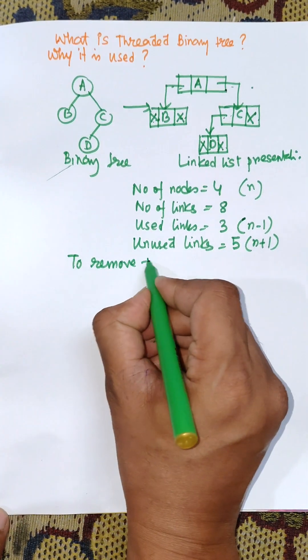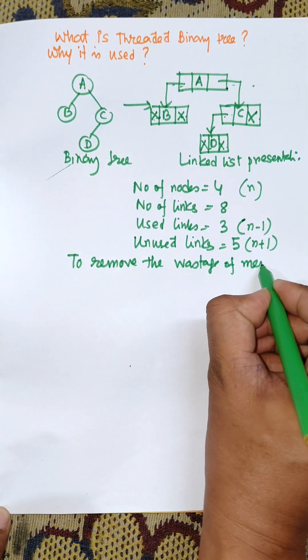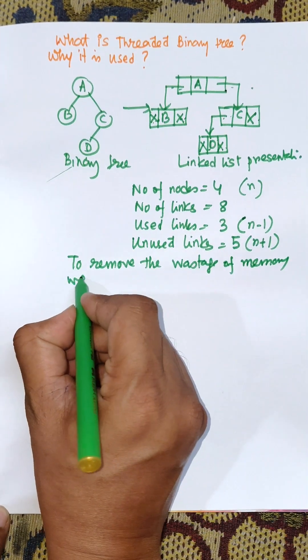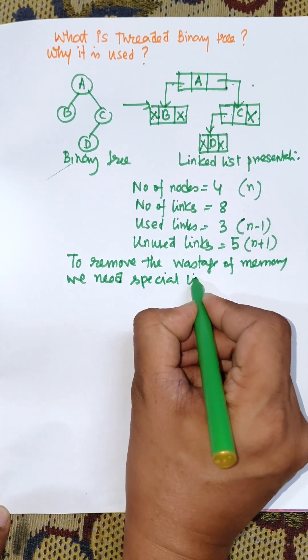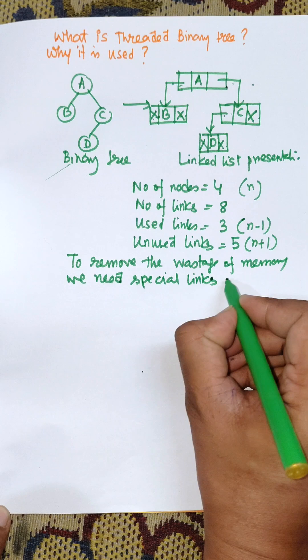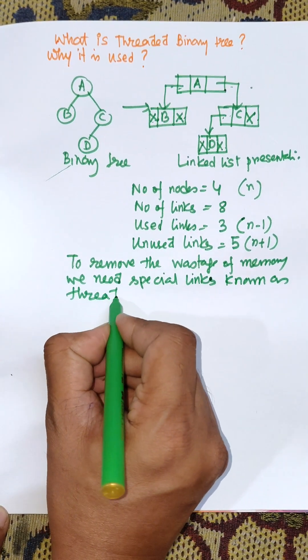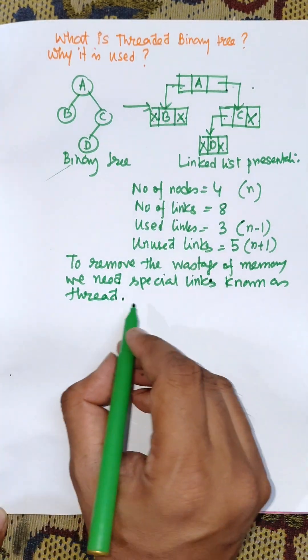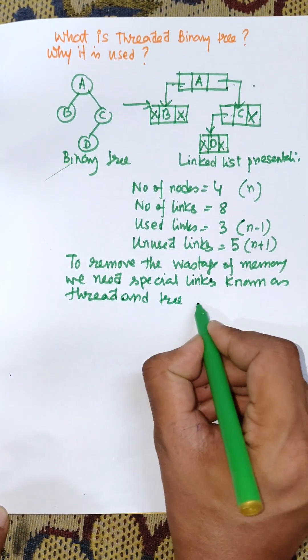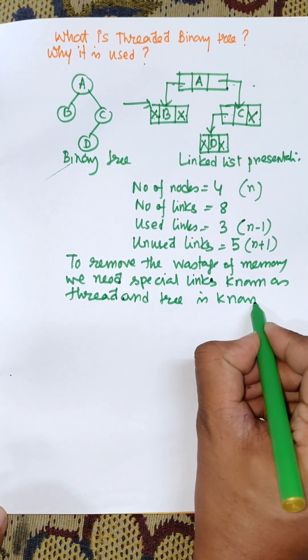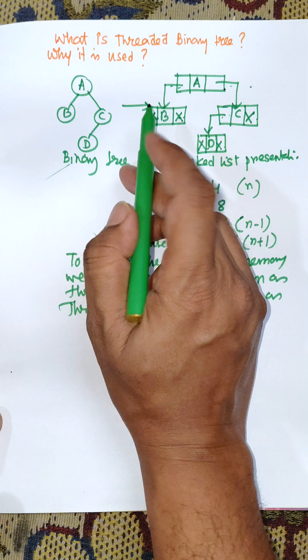We need special links known as threads, and the tree is known as threaded binary tree. Both the left link and right link can be pointed by threads instead of null.